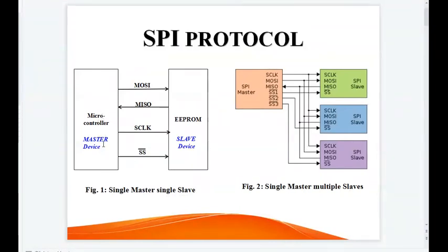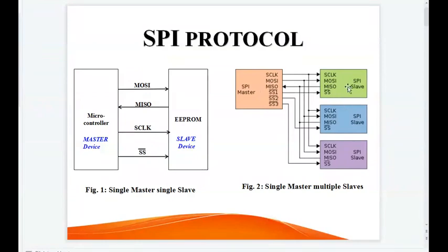In figure 1, the microcontroller is a master device and an EEPROM is a slave device. The master device is connected with the slave device using four different lines. In figure 2, there is a single SPI master and three SPI slave devices. A common clock is shared with all the slave devices, and there is an independent slave select line for each of the slave devices.